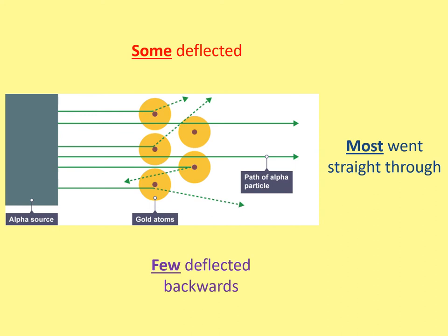The second result is shown in red at the top: some deflected. You can see the alpha particle getting close to the nucleus and then kind of steering off course — it bends away. Deflected means to change direction. So most went straight through, and some deflected.